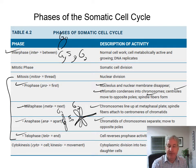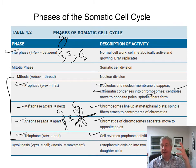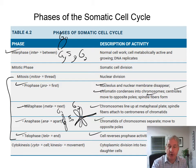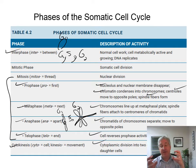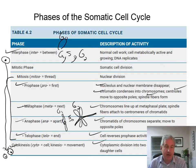In telophase, the cell reverses the prophase activity. Chromosomes go to the far ends of the poles, the nuclear membrane starts forming back around them, and the chromosomes relax and become uncondensed so they can start making RNA again. Cytokinesis occurs after telophase — they actually overlap slightly; the cell starts pinching in before telophase is completely finished.